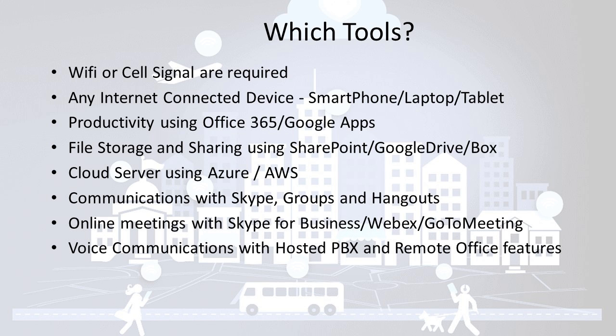Which tools do we need to connect to the cloud? We need an internet connection — Wi-Fi, Ethernet, or cell phone. We need an internet-connected device like a computer, smartphone, or tablet. We need productivity suites using either Microsoft Office 365 or Google Apps — these give you email and file sharing. For file storage and sharing, you can use SharePoint, which is part of Office 365, Google Drive, or Box.org. For infrastructure as a service, use Microsoft Azure or Amazon Web Services. For communications, use Skype, Google Groups, or Hangouts. For online meetings, use Skype for Business, WebEx, or GoToMeeting. For voice communications, you can move to a hosted PBX with remote office features.